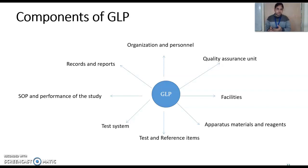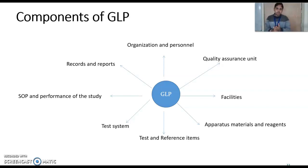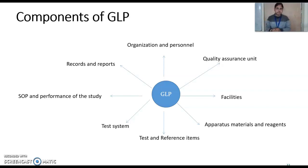Test and reference items: the standards you are using for comparison of results should all be available with proper storage. Test systems — because to conduct animal experimentations or in vitro work you should have the appropriate cell line. Whatever test system you are going to use, that test system should have adequate facility. If you want to do experiments on animals, you should have an animal house facility as per guidelines, and your in vitro facility should also meet guidelines.